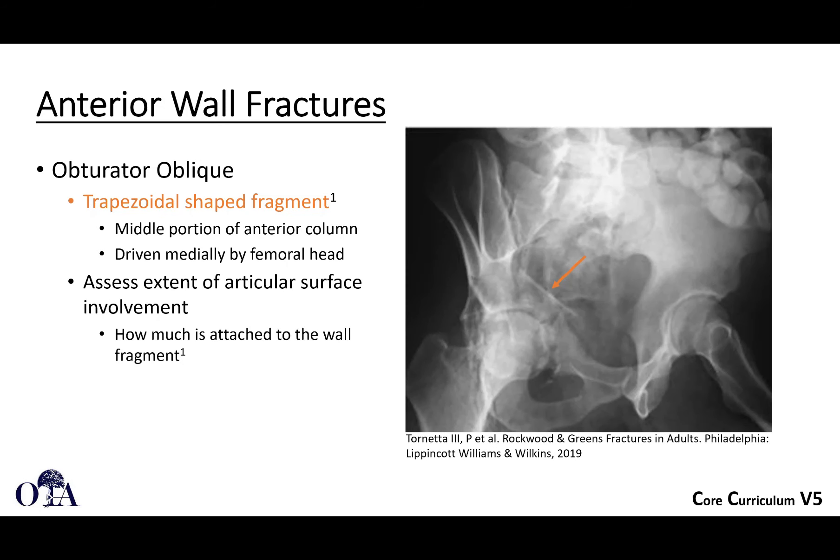The fracture typically occurs along the upper one third of the anterior column. On the obturator oblique view, you will often see this trapezoidal shaped fragment, which is the middle portion of the anterior column, and it's usually going medially along with the femoral head. As opposed to a posterior wall fracture where the head goes out the hip posteriorly, in anterior wall cases it is actually driven medially. A lot of times you'll have this quadrilateral plate blowout with this fragment and the head going medially — kind of like a protrusio pattern.